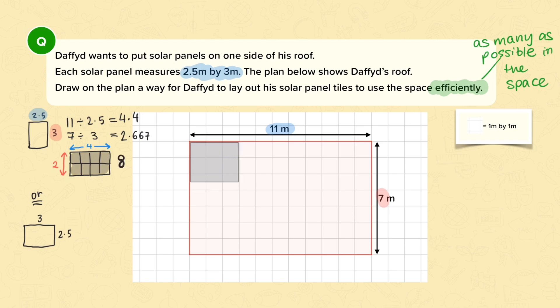Now to check the other possible layout, we want them to go this way, so 3 by 2.5, like that. So we want to see how many 3's are there in 11. So 11 divided by 3 is equal to 3 and a bit, so 3 whole solar panels that way.